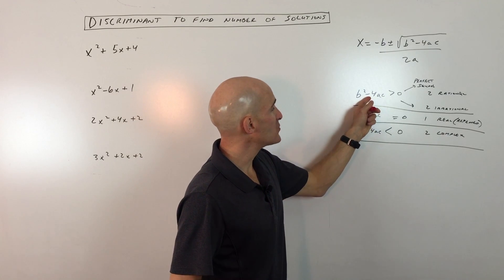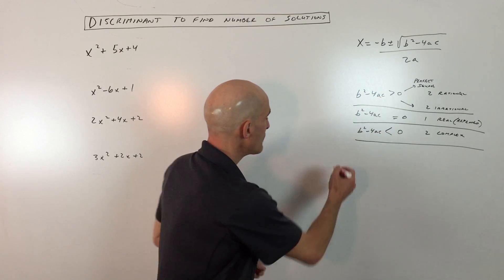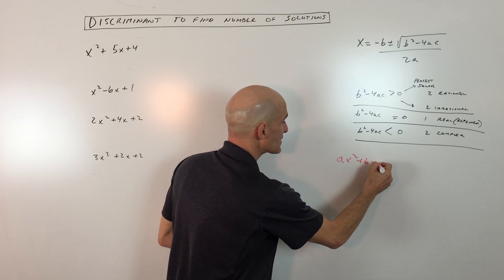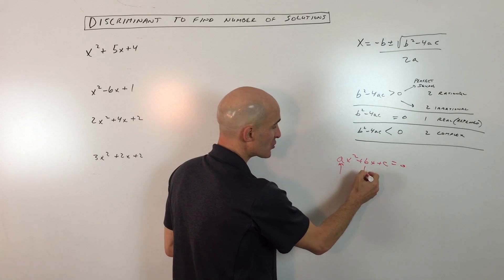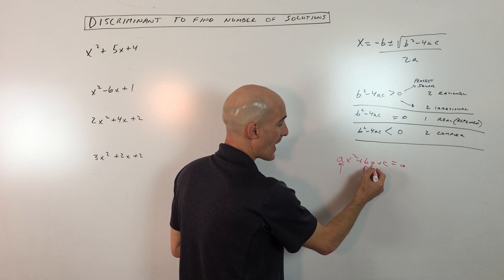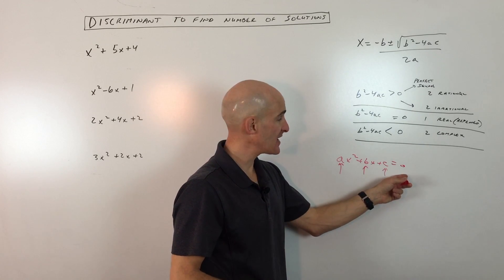The way you would do that is you calculate what b squared minus 4ac is, and just keep in mind that this is in the form ax squared plus bx plus c equals zero, so the a is the coefficient in front of the x squared term, the b is the coefficient in front of the x term, and then the c is the constant. Make sure everything's on one side and it's set equal to zero.